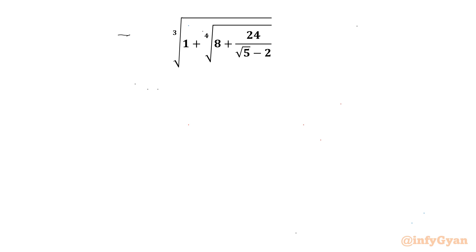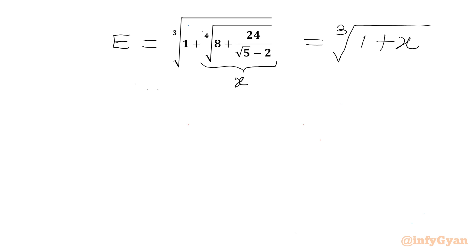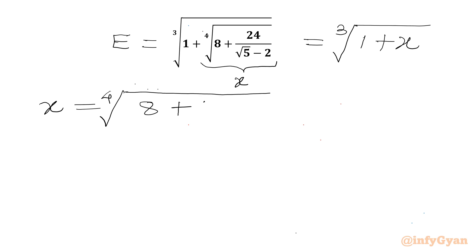So let us get started by considering the expression equal to e. Now I will consider the fourth root equal to x. So our expression we can write as cube root of 1 plus x. Let us calculate x separately. x will be equal to the fourth root of 8 plus 24 over the square root of 5 minus 2.